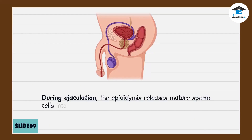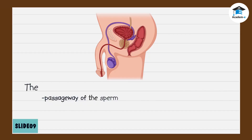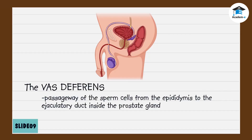During ejaculation, the epididymis releases mature sperm cells into the vas deferens. The vas deferens serves as a passageway of the sperm cells from the epididymis to the ejaculatory duct inside the prostate gland.